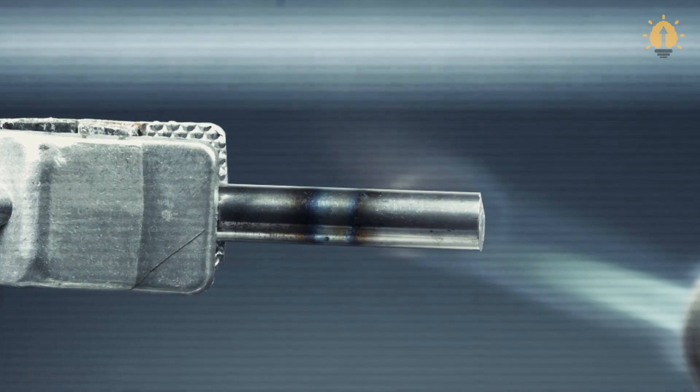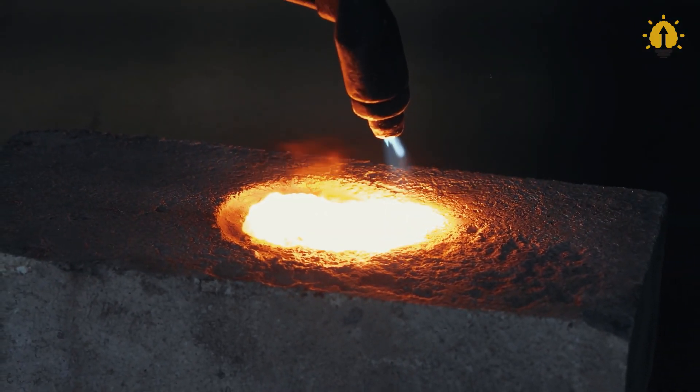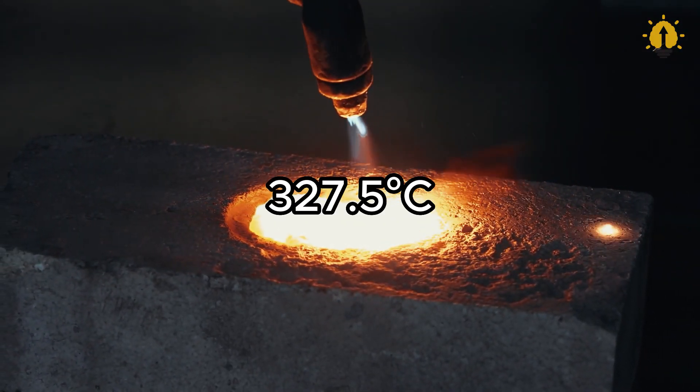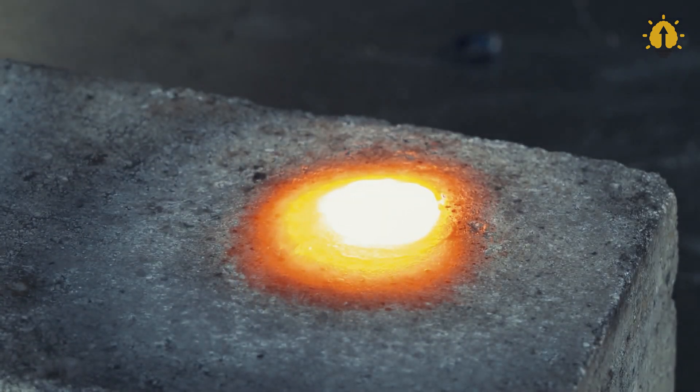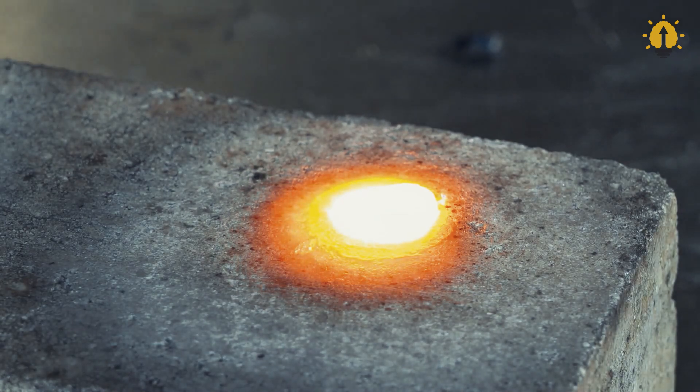But what about metals? Well, the melting point of lead is about 327.5 degrees Celsius. That means if you heat lead to that temperature, it transforms from a solid into a liquid.